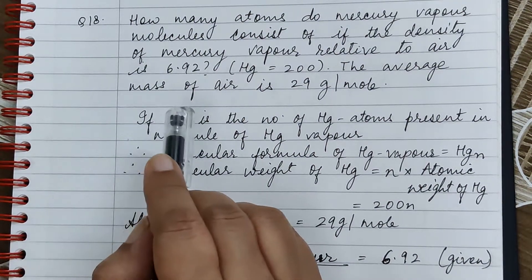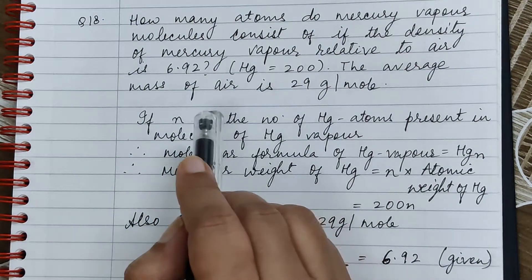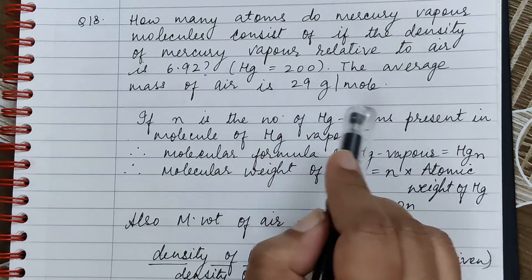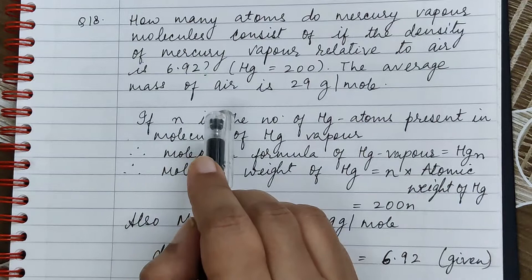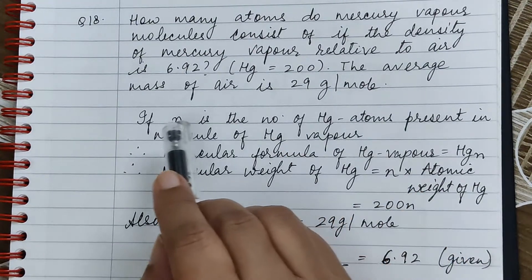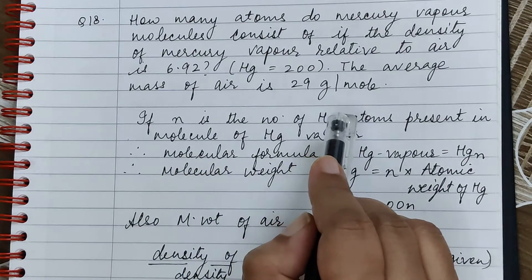Question 18. How many atoms do mercury vapor molecules consist of if the density of mercury vapor relative to air is 6.92? Atomic weight of mercury is 200. The average mass of air is 29 grams per mole.